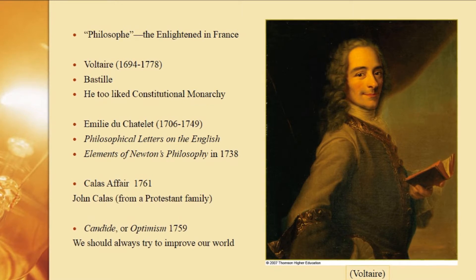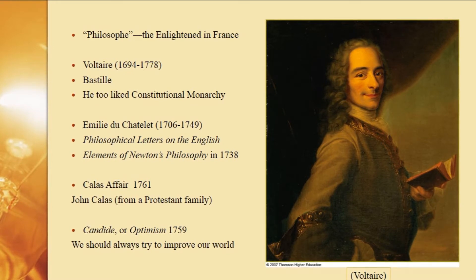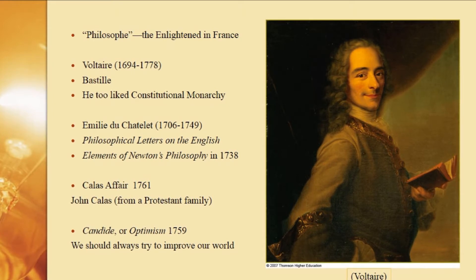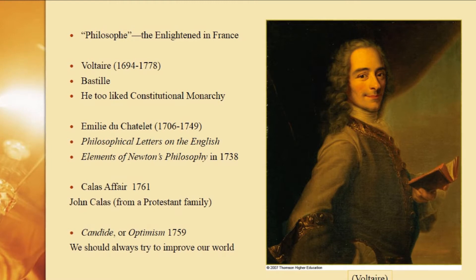He went back to France and wrote another book called Philosophical Letters on the English. It seemed like a safe topic — he was comparing English constitutional monarchy to the Roman government — but it was really a veiled attack on his own French government. Of course, they didn't like that and issued an arrest warrant for him.